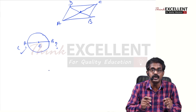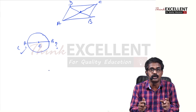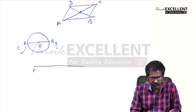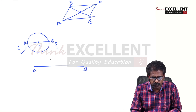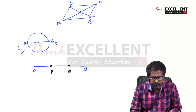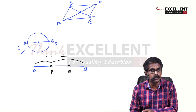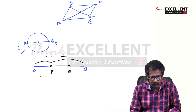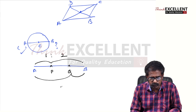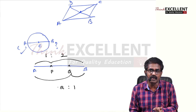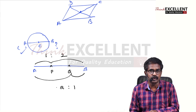Trisection means dividing into three equal parts. To cut a line into three equal parts, you cut in two places — say at P and Q. To find P, use the ratio 1 is to 2. To find Q, use the ratio 2 is to 1. That's the only change. So to find the points of trisection, first time use 1 is to 2, second time use 2 is to 1.